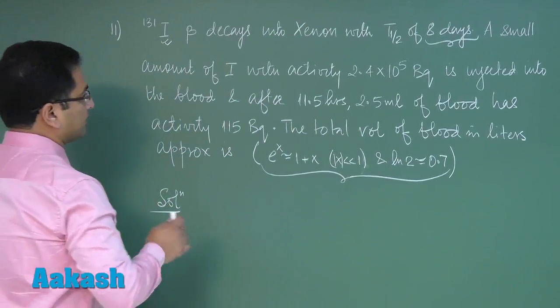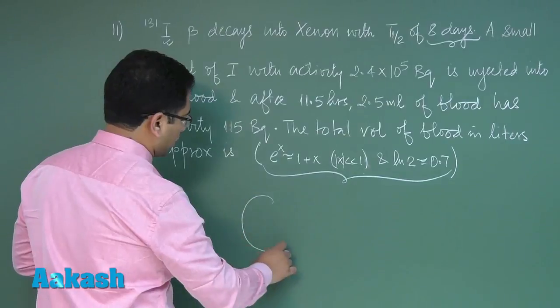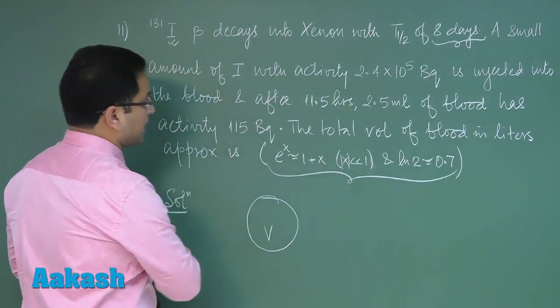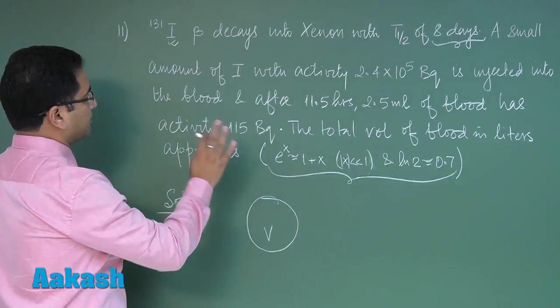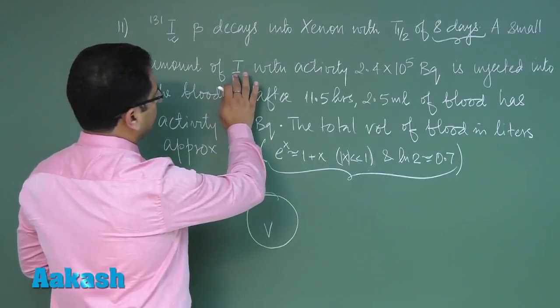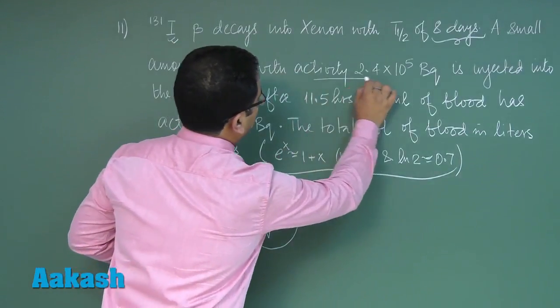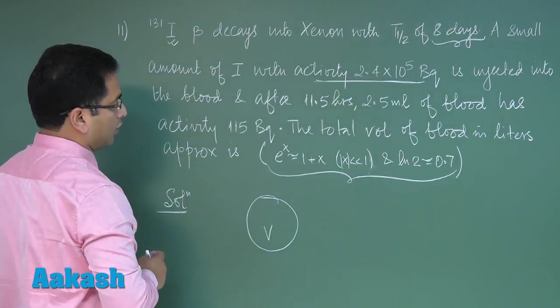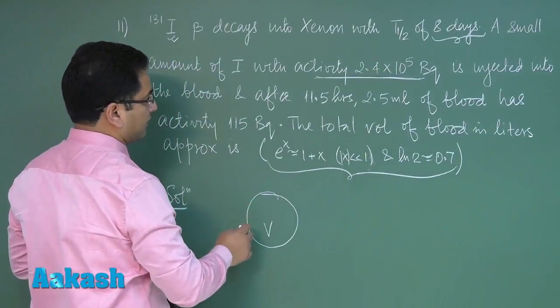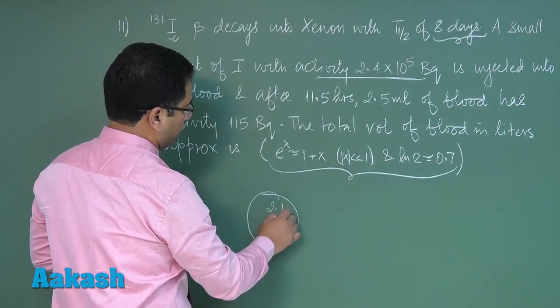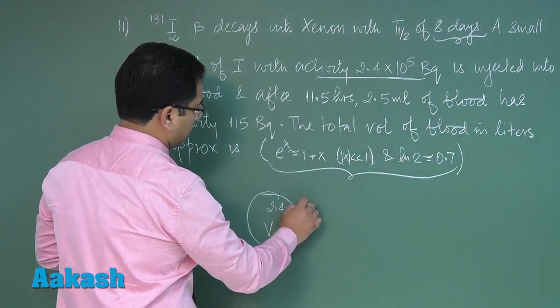Let's try to show it in the form of a figure. If the total volume of blood is V, then in that particular V volume of blood the substance iodine is injected with initial activity 2.4 × 10^5. So this is the initial activity 2.4 × 10^5.